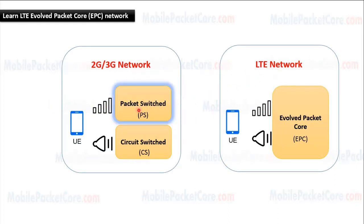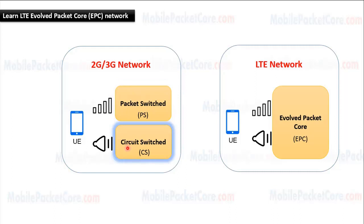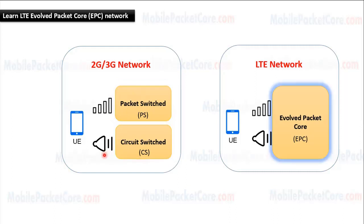The core network in 2G 3G contains the packet switch domain that handles the data sessions of the users, and the circuit switch domain that handles the voice calls of the users. While in LTE, the core network contains only one domain which is the Evolved Packet Core, that handles both the data sessions and the voice calls of the users.